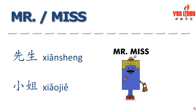Now that we've covered surnames, let's see how we can use them with titles. First, we've got to learn how to address men. In English, we use Mr. In Chinese, we say 先生. This just means Mr.